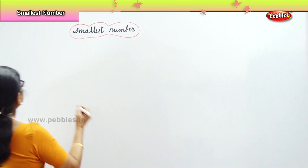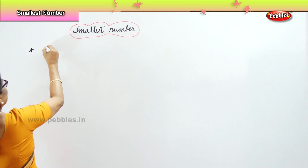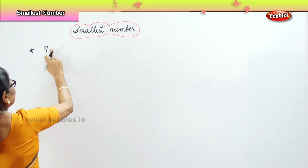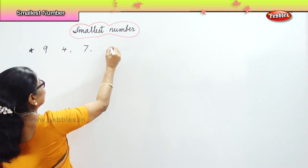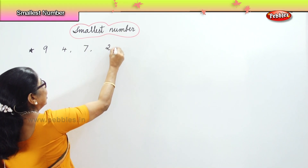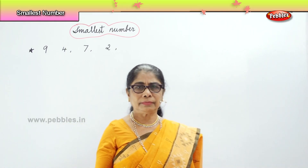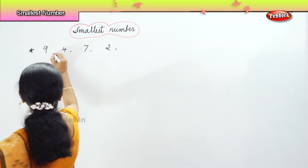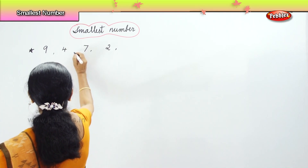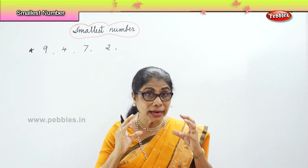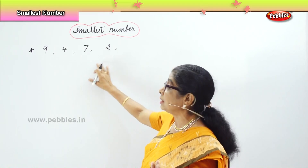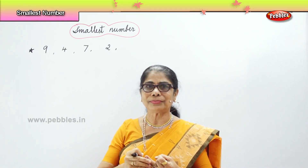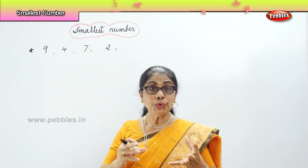Now when we say numbers, let's say 9, 4, 7, 2. I have here 4 numbers. They are all single digits: 9, 4, 7, 2. Now when we look at the numbers, if we are given 9 chocolates, 4 chocolates, 7 chocolates, and 2 chocolates — 9 chocolates. You know to count.